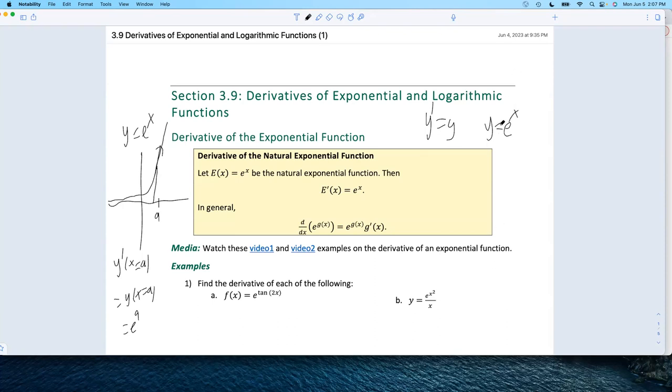And of course, we could put any number in front of there, and that would still work. The derivative of y equals five e to the x would be five e to the x. The five just comes along for the ride. The derivative of e to the x is e to the x.